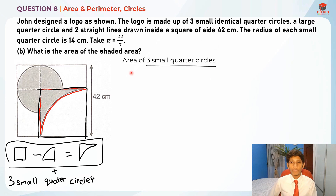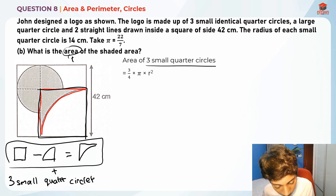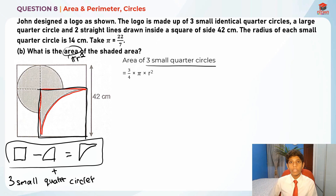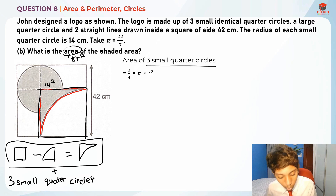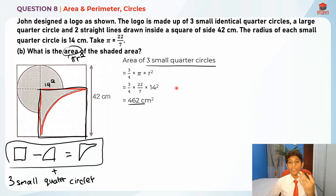How do we find the area of three small quarter circles? We take 3/4 × π × r². The formula for area of a circle is π × r². Since it's three-quarters of a circle, we take 3/4 × π × r². Here r = 14, so: 3/4 × 22/7 × 14² = 462cm². This is the area of the three small quarter circles.